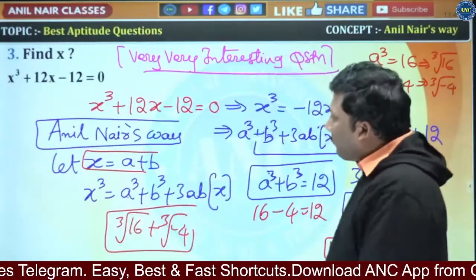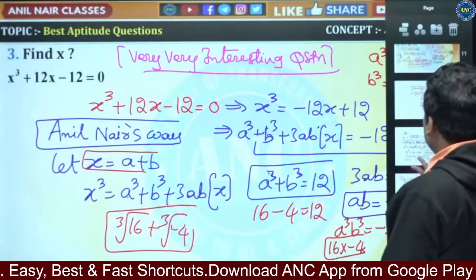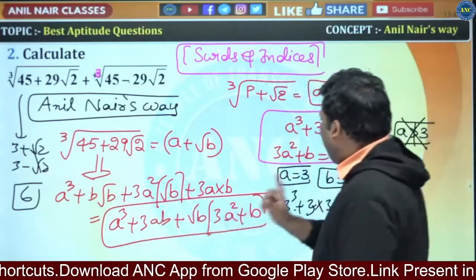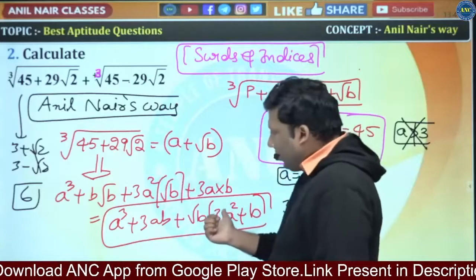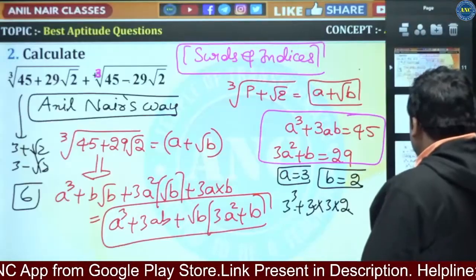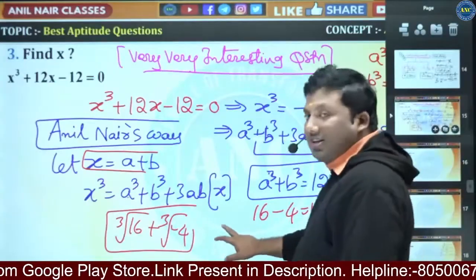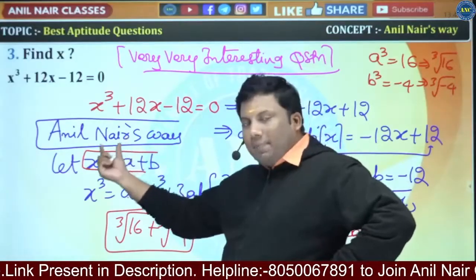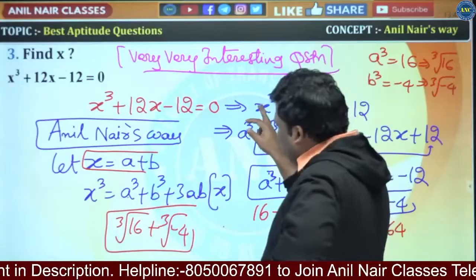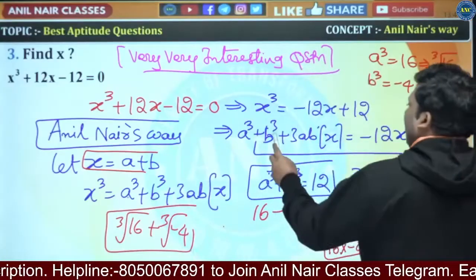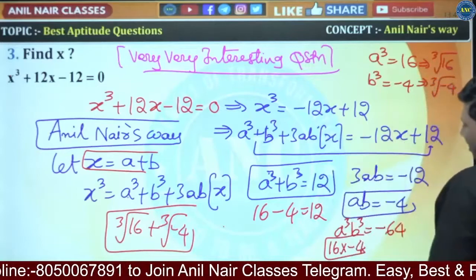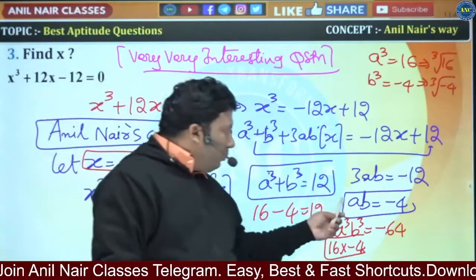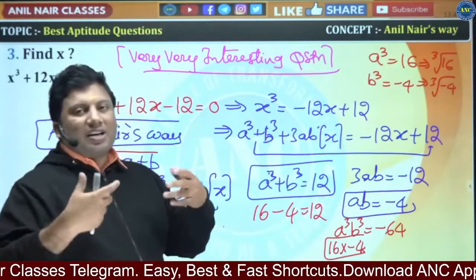Let me explain where I got this idea. What we are doing is comparing a³ + 3ab + b³ with the constants. Since x appears on the right-hand side, I substituted x = a + b. Cubing it gives a³ + b³ + 3ab·x = x³. Substituting: a³ + b³ = 12 and 3ab = -12, so ab = -4.